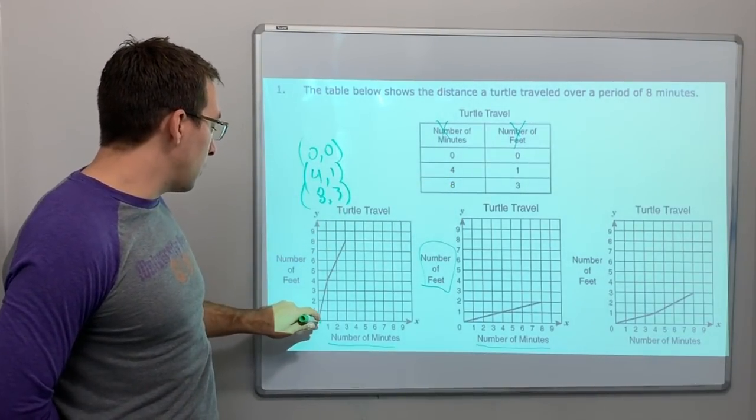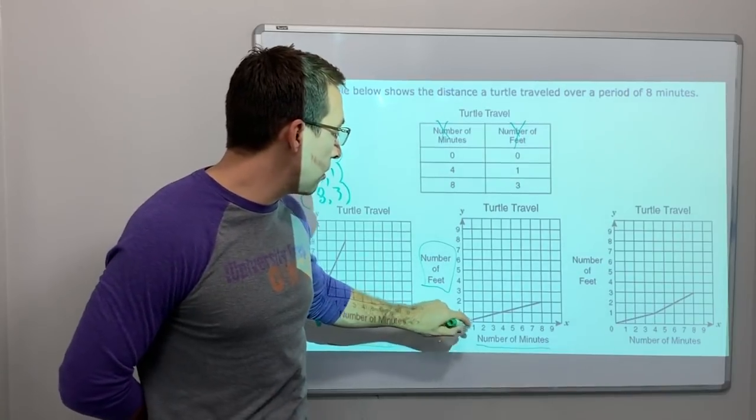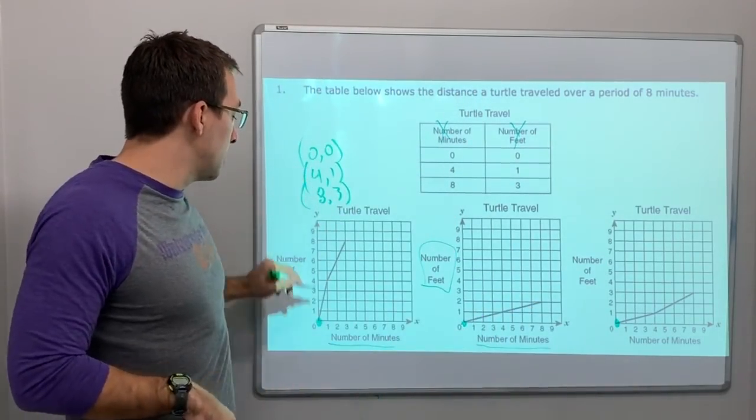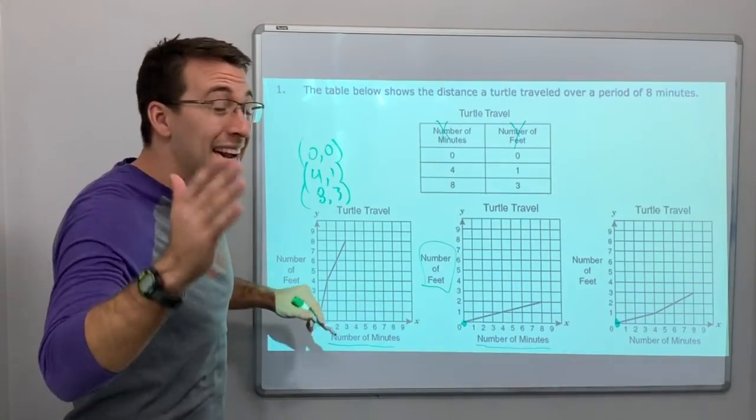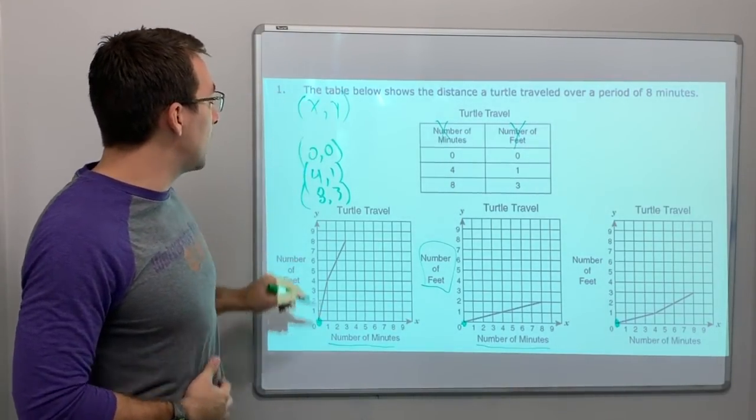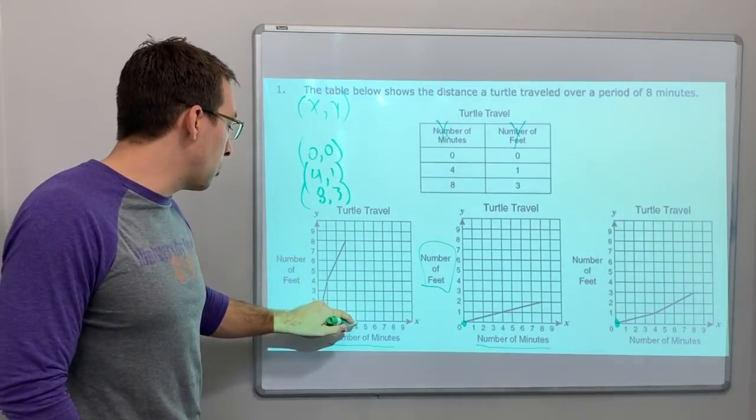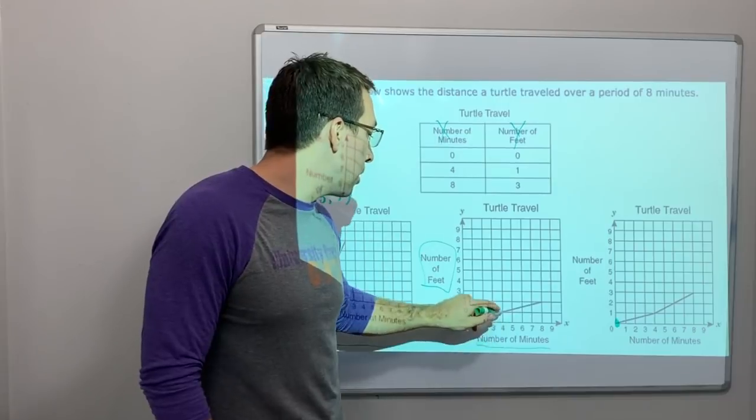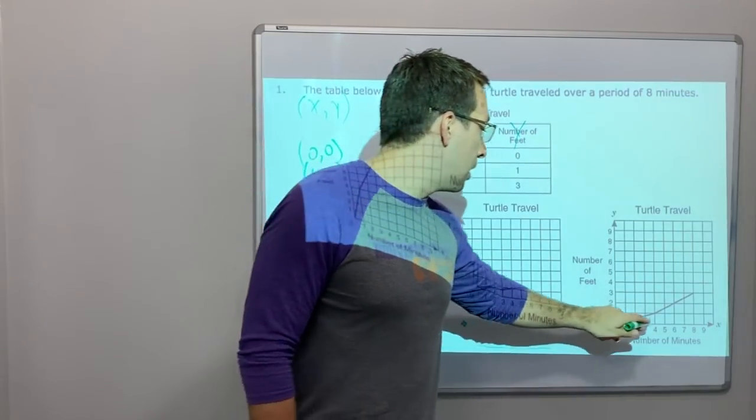Let's start with zero zero. We gotta be zero zero. We're all zero zero here. Four one. Over four because we do our x first. Remember, x always comes before y. One, two, three, four, and then up one. One, two. So we're right here, and we're right here. These are correct.